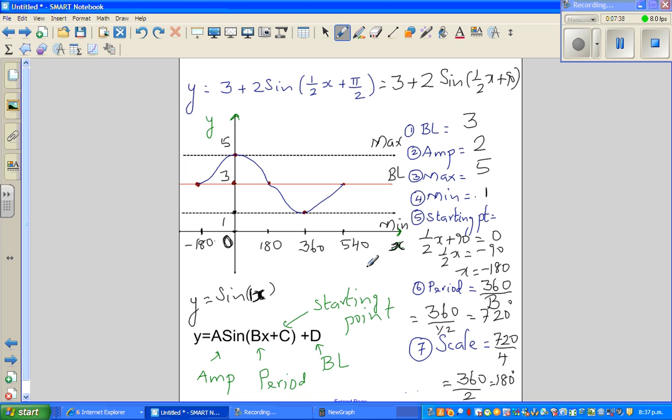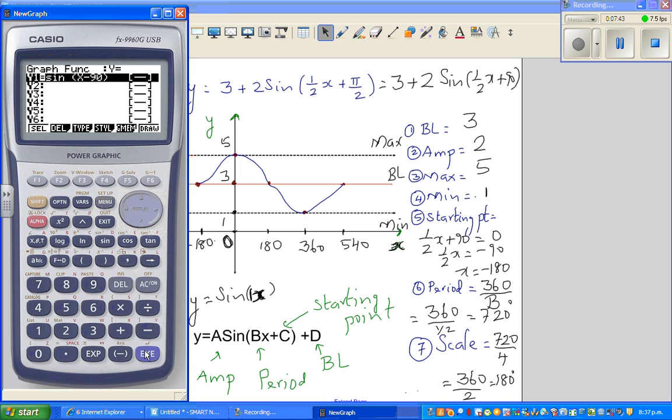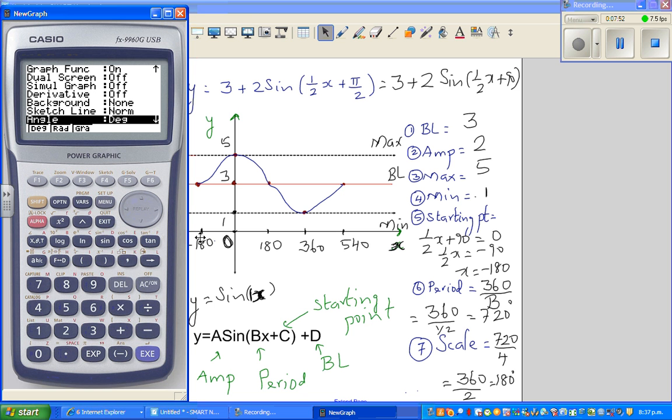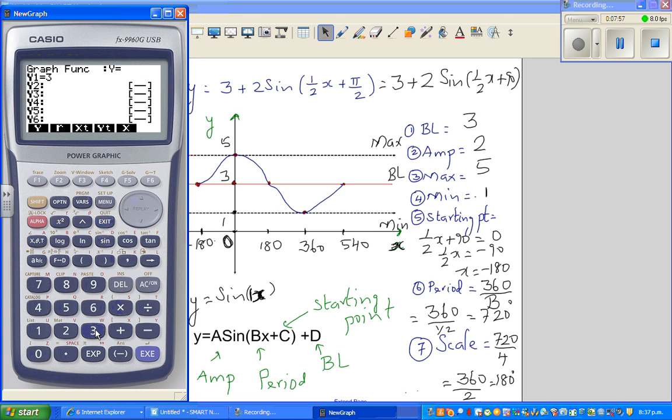Let's check this on a calculator. Let's go to graph and delete this. Before you go to the graph, always look at the setup. This is in degrees, we're working in degrees. I'll type the equation: 3 plus 2 sine bracket 0.5x plus 90. Now we need to change the scale, we need a trig scale. From minus 180 to 540, and a scale of 180 degrees. We want to go from 0 to 6 and a scale of 1. Let us draw it. This is the graph.